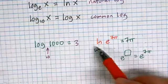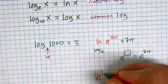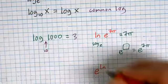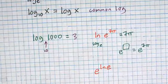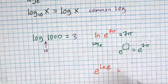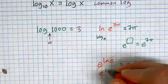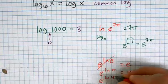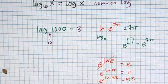Get used to the idea that ln and e cancel each other out — whether the exponential is inside the log or the log is inside the exponential. So e to the ln of e: the e and the ln cancel, and the answer is e. And e to the ln of 5 is 5, e to the ln of 42 is 42. The ln's and the e's cancel each other out.